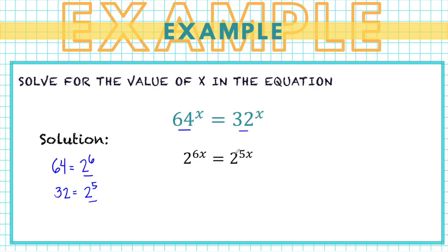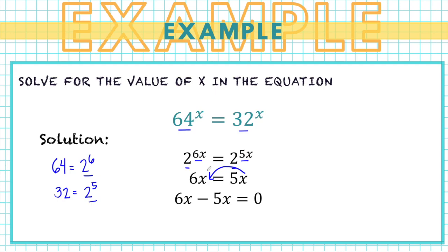According to the property of equality of exponential equations, once the bases are equal, we can equate the exponents. So we have 6x equals 5x. Transposing 5x to the other side gives us 6x minus 5x equals 0. Since 6x minus 5x is x, thus x is equal to 0.